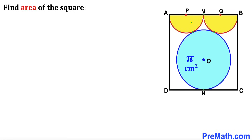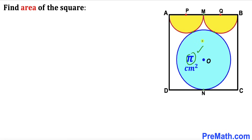Welcome to PreMath. In this video we have two identical semicircles and a blue circle fully confined in a square ABCD. These two semicircles and the blue circle are tangent to each other. The area of this blue circle is π centimeter square with center O, and the centers for these semicircles are P and Q. Our task is to calculate the area of square ABCD.